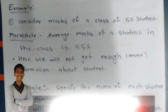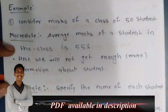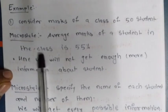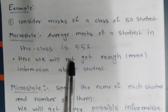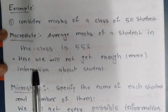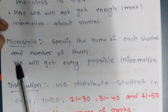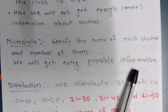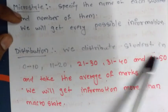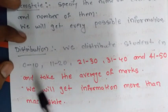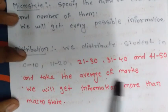Consider the marks of a class of 50 students. In macrostate, we get just enough information — for example, the average marks of a student in the class is 55 percent, without more detail about any individual student. In microstate, we specify the name of each student and their marks, giving every possible detail. In distribution specification, we distribute the students into groups — for example, 0 to 10, 11 to 20, 21 to 30, up to 41 to 50 — and take the average of the marks, giving information more than the macrostate but less than the microstate.